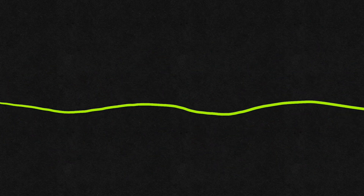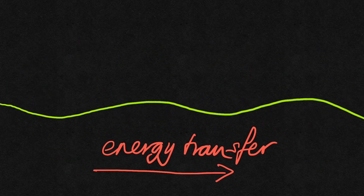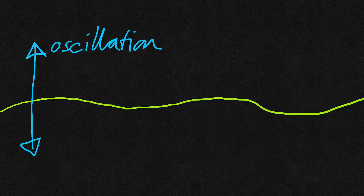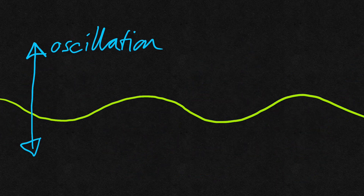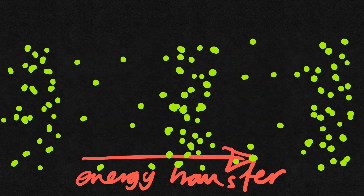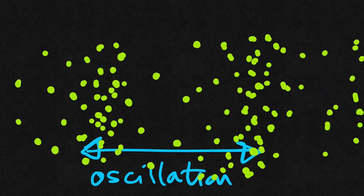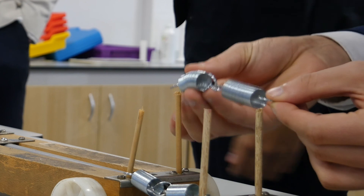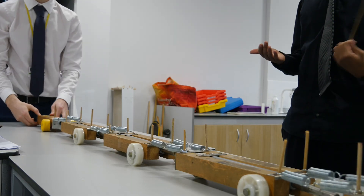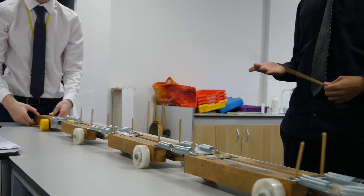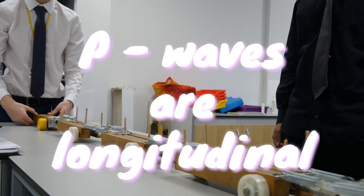Seismic waves are often used as an example for teaching the difference between transverse and longitudinal waves, and it's something that you really need to have defined whether you're doing GCSE physics or A-level physics. P waves are pressure waves, so they're longitudinal, and they're also the faster of the two seismic waves. That's why they're often called primary waves.